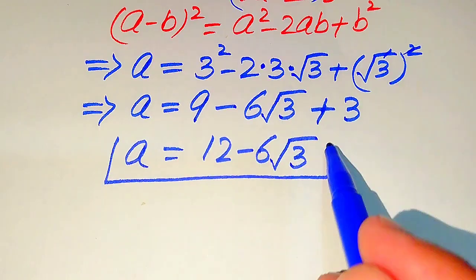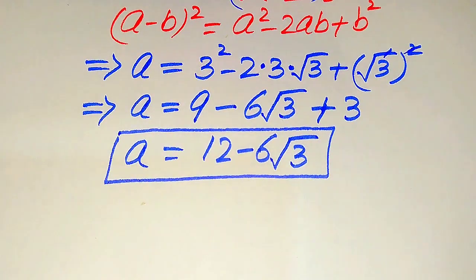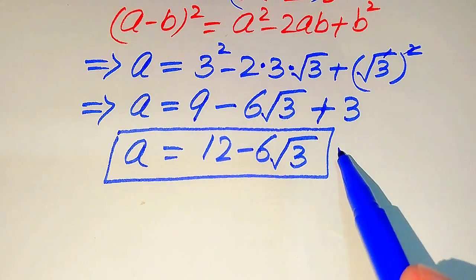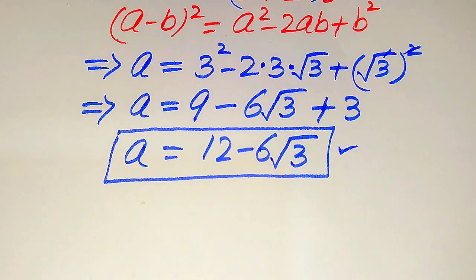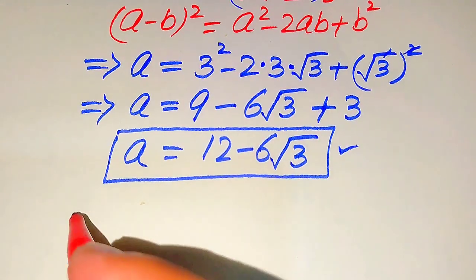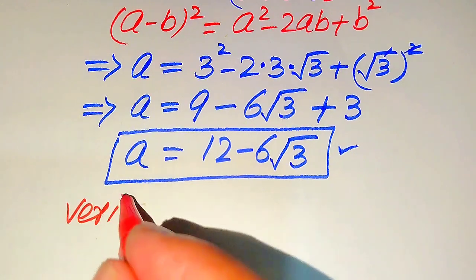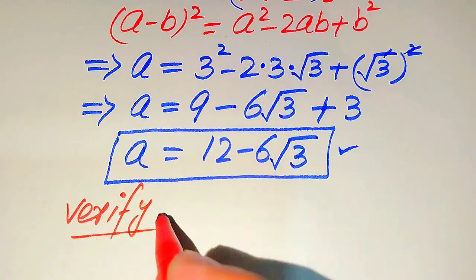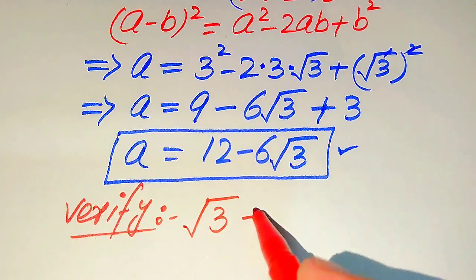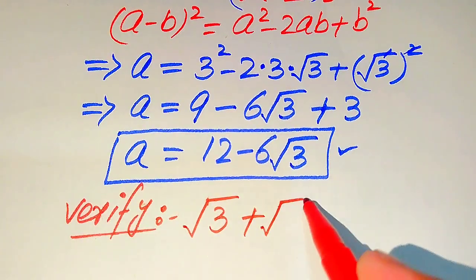So in this question we get only one root of the given equation, and that is 12 minus 6 times square root of 3. Now we need to verify this root and check whether it is the solution or a extraneous root. For verification we copy down the given question statement.